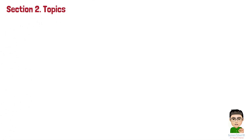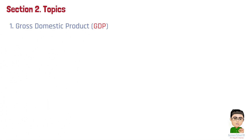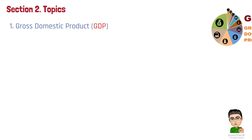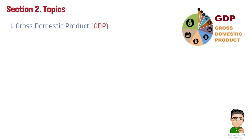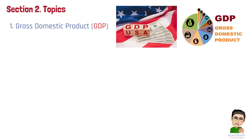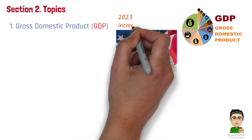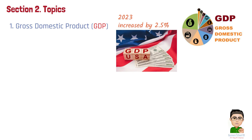The major topics in macroeconomics include the following. Number 1: Gross Domestic Product, GDP. GDP measures the total value of all goods and services produced in an economy over a specific period. It provides a snapshot of economic performance and growth, helping to assess whether the economy is expanding or contracting. For example, during 2023, the U.S. GDP increased by 2.5%, driven by higher consumer spending and growth in sectors like technology and manufacturing.